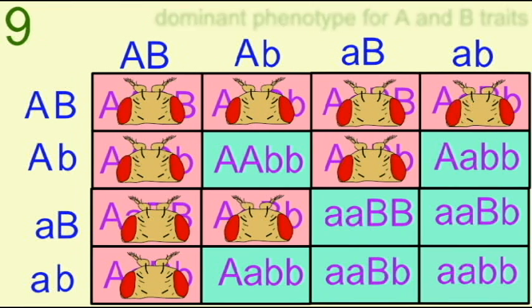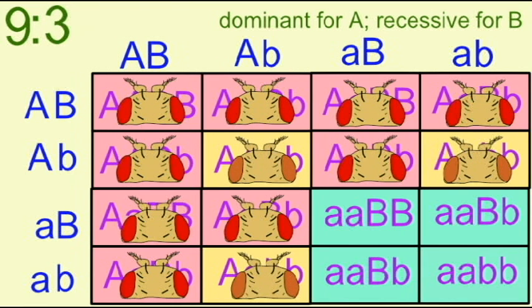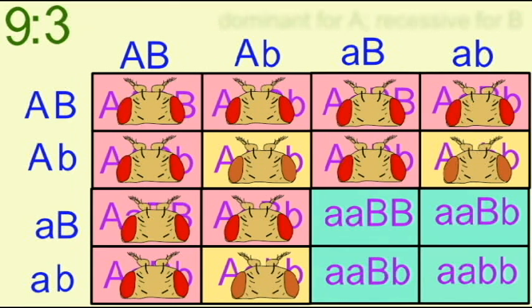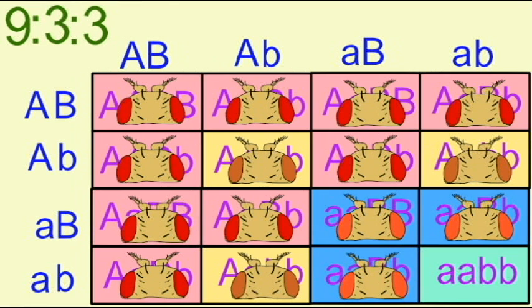9/16ths of the offspring have at least one dominant allele for each of these two genes. 3/16ths of the offspring are homozygous for the brown mutation and therefore possess brown eyes. 3/16ths of the offspring are homozygous for the scarlet mutation and therefore possess scarlet eyes. And 1/16ths of the offspring are homozygous for both the brown and scarlet genes, being unable to transport either the brown or scarlet pigments into the Drosophila eye, therefore they have white eyes which are devoid of pigment.